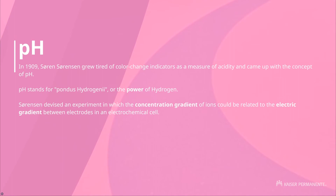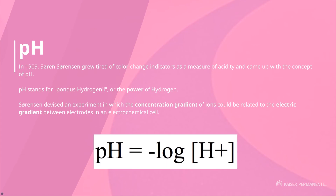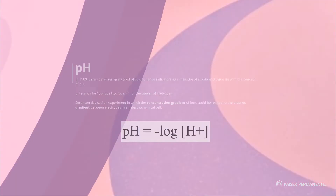Then came the pH scale. Soren Sorensen grew tired of the qualitative, colorimetric methods of measuring acidity during his time. He found that by sticking electrodes into a solution, you could measure the electrical activity and correlate it with ionic gradients — specifically hydrogen ion concentration. He coined the term pH, which stands for 'pondus hydrogenii,' translating to 'the power of hydrogen.' pH is a negative logarithmic scale — the more hydrogen ions you have in the body, the lower your pH will be.